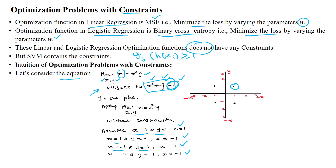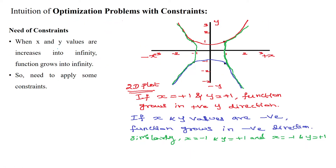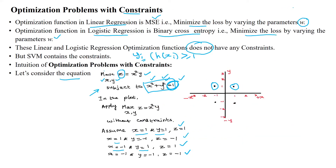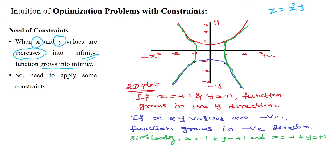The purpose of the constraint is this: when x and y values increase toward infinity, the function z equal to x squared times y also grows to infinity. So we need to apply some constraint to avoid that unbounded growth.